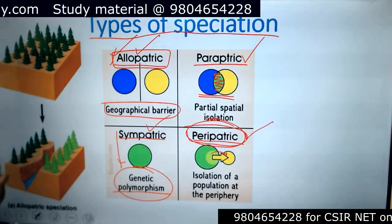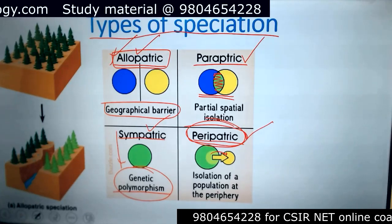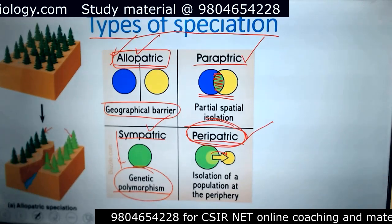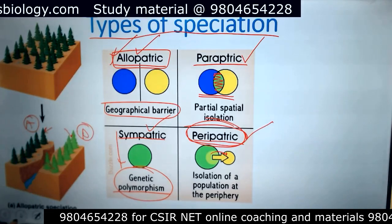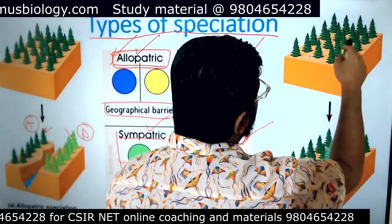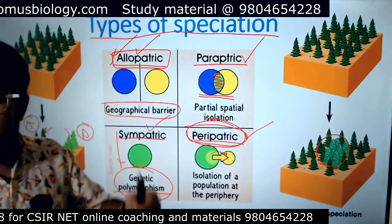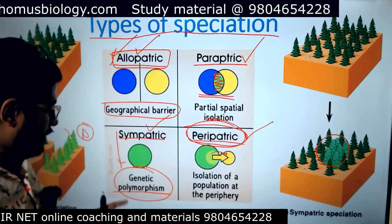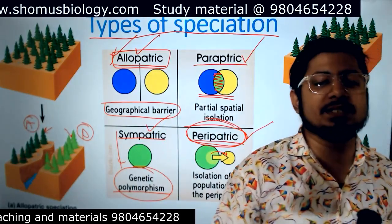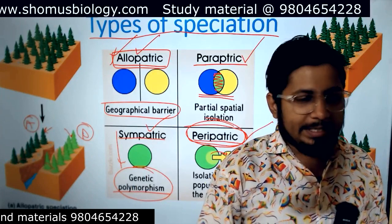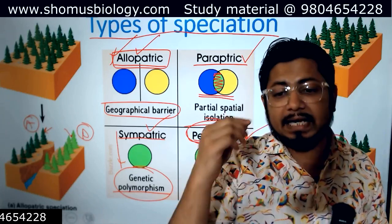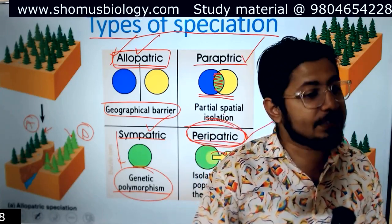Here you can see an example of allopatric speciation: trees living in an area are separated by a river. The two separate parts now have different environmental factors, so the trees change differently — one remains ancestral, the other becomes a new descendant. Sympatric speciation shows no physical barrier, but modification occurs through genetic polymorphism. If allele frequencies remain the same from one generation to the next, the population is not evolving; if allele frequencies change from generation to generation, the population is evolving.